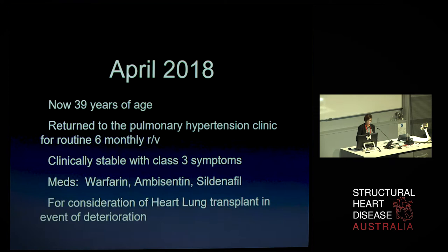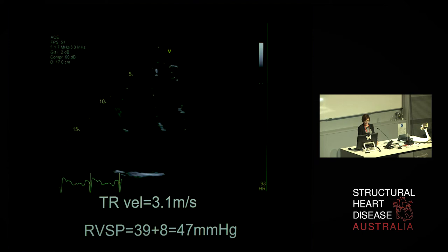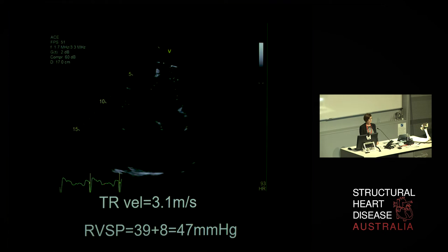Now it's April 2018, and she's now 39 years of age. She returned for her routine review and routine echo. This was the echocardiogram obtained in April of last year — this is the four-chamber view — and you can see she has a big right heart. Her pulmonary pressures are elevated with the right ventricular systolic pressure estimated at 47 mmHg, assuming a right atrial pressure of 8.